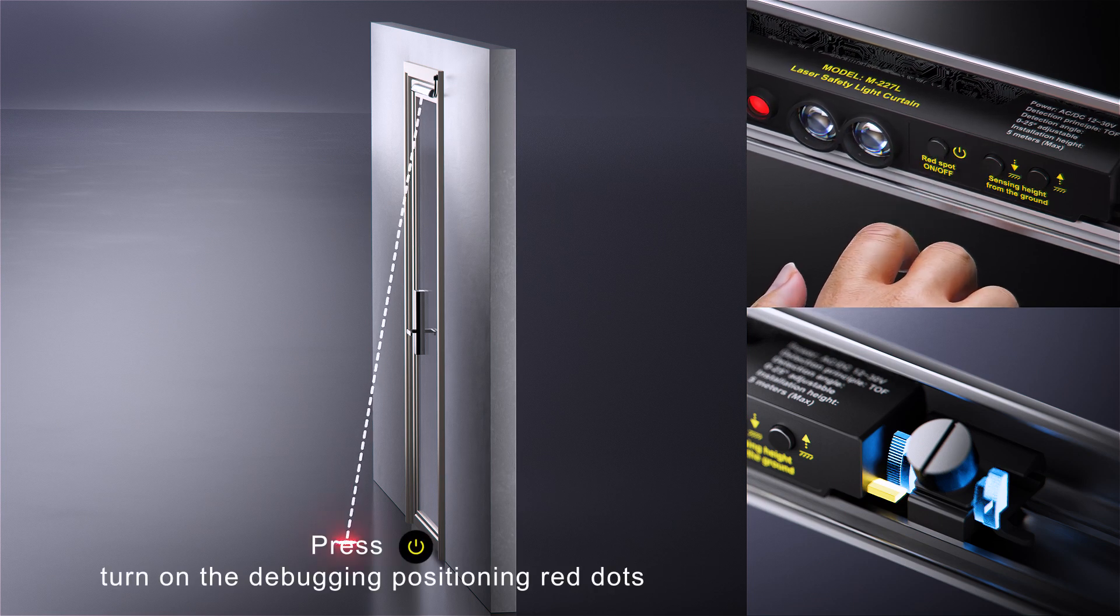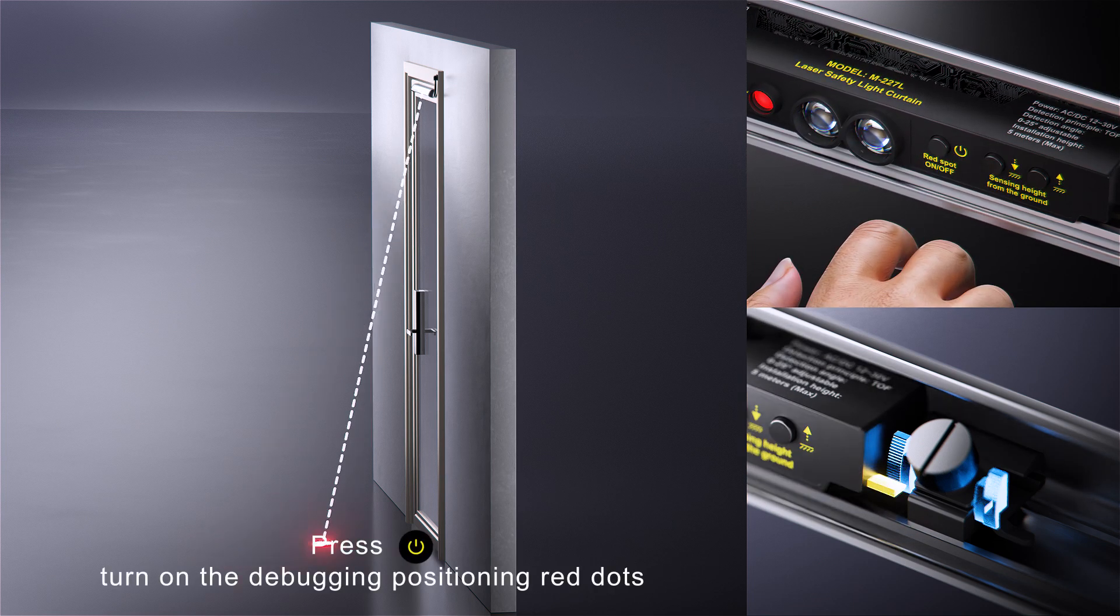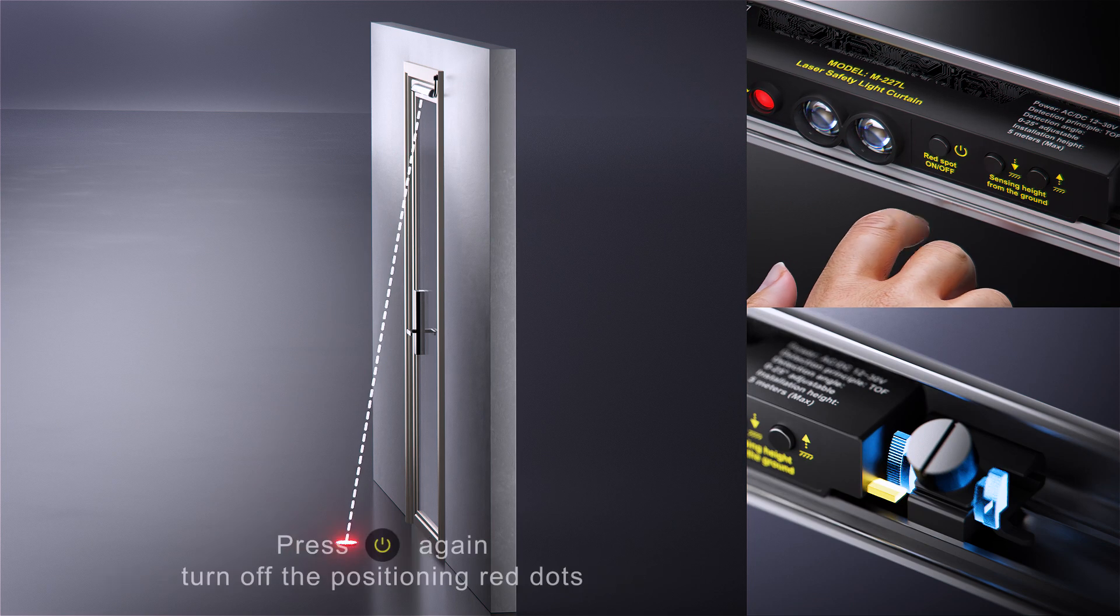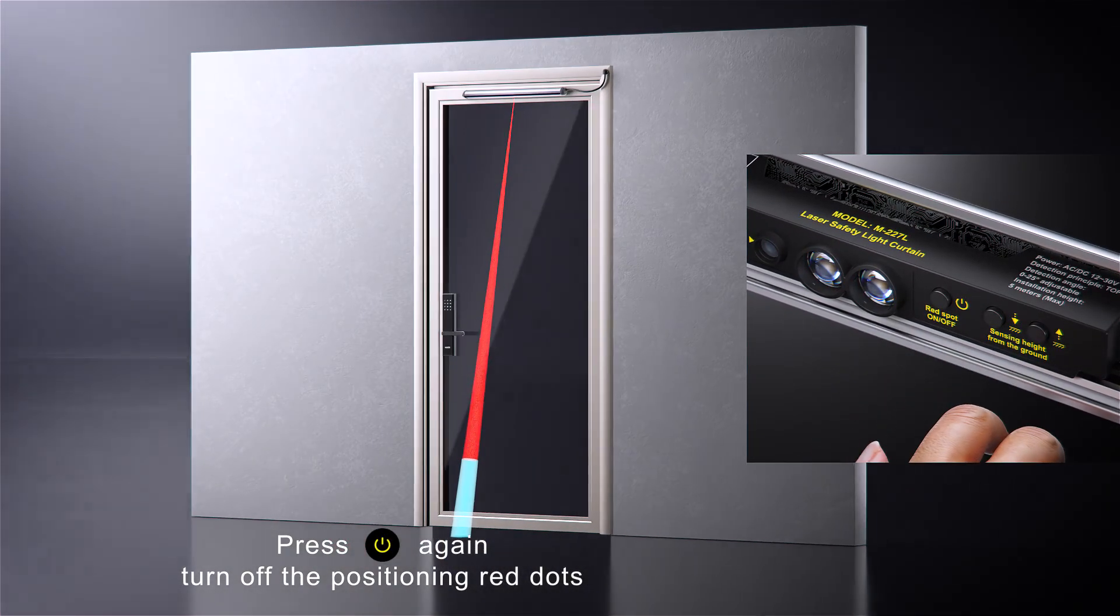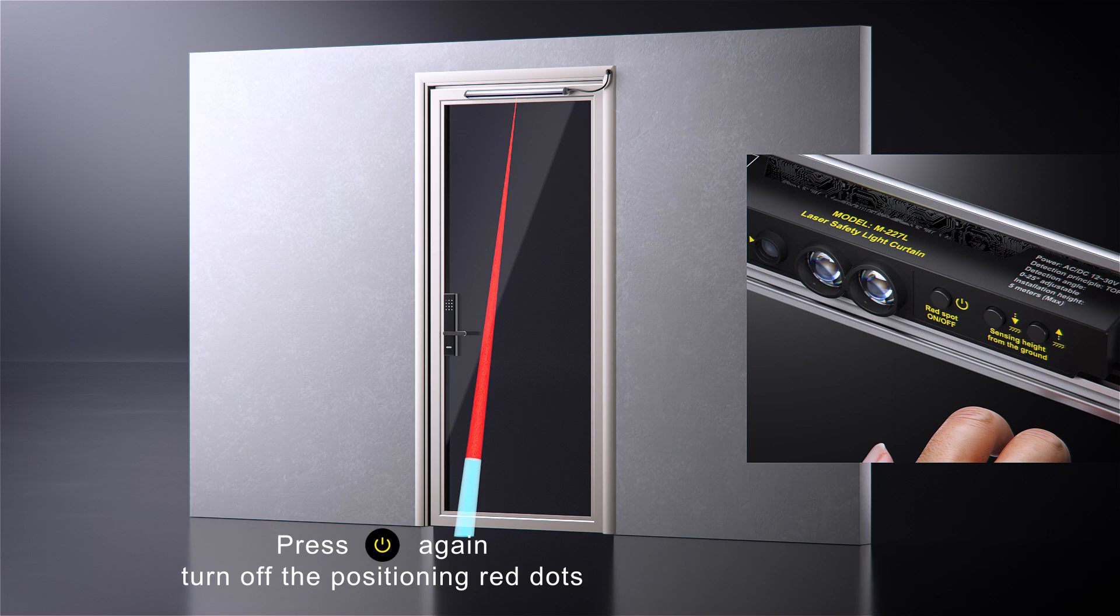Press ON-OFF button to turn on the debugging positioning red dots. Press ON-OFF button again to turn off the positioning red dots.